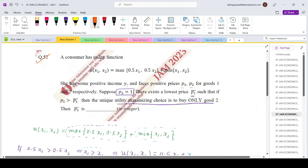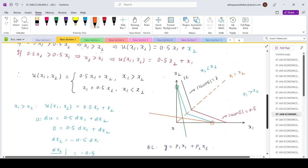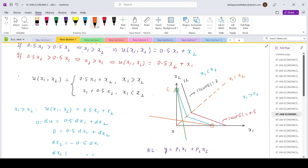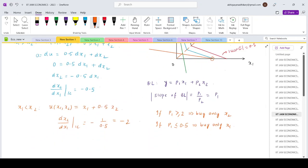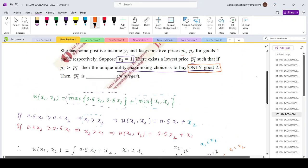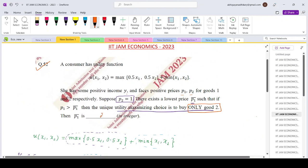Now in the question we are asked at the utility optimizing choice we should buy only good 2. So only good 2 will mean we are talking about this optimal. So the minimum price that will ensure that we are having only good 2 purchased at the optimal is equals to 2. So p₁ bar equals 2. Thank you.